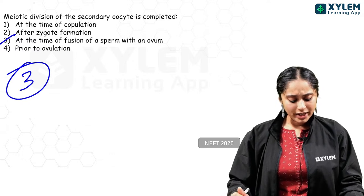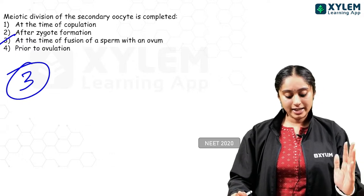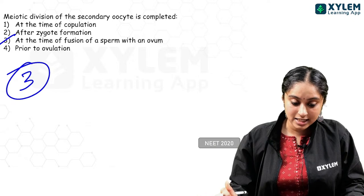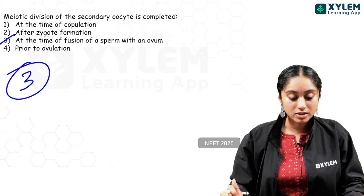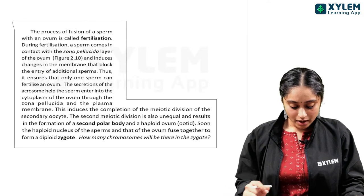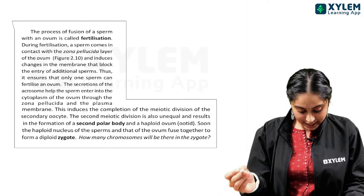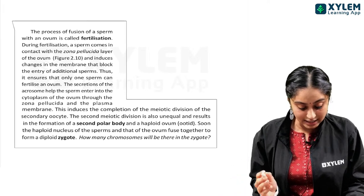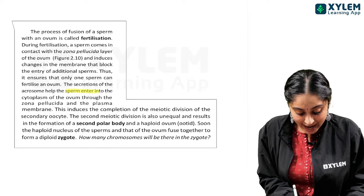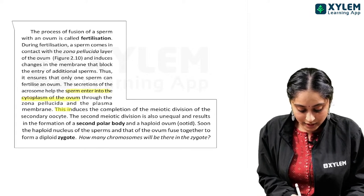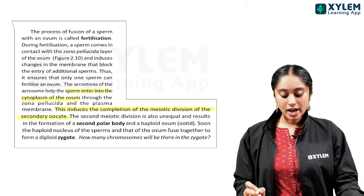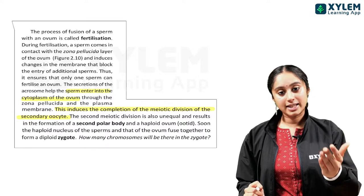NCERT states that whenever there is fusion of the sperm and ova — when the sperm enters into the cytoplasm of the ovum — that is when it induces the completion of the meiotic division of the secondary oocyte. Pretty much all questions come directly from NCERT, so read it line by line.